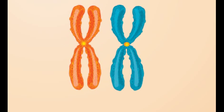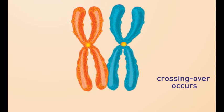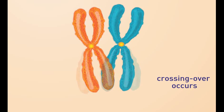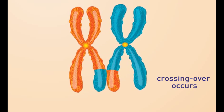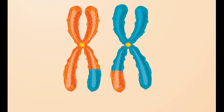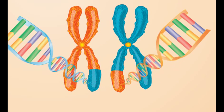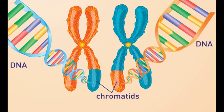Sometimes, homologous chromosomes exchange segments of DNA. This is called crossing over. When crossing over occurs, each chromatid ends up with a unique sequence of DNA.